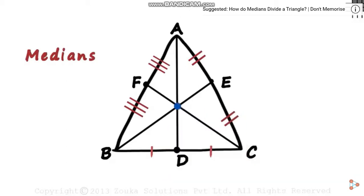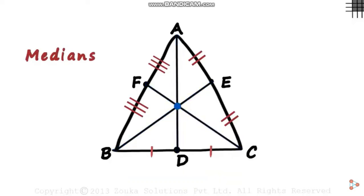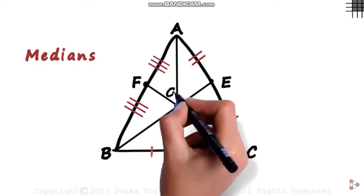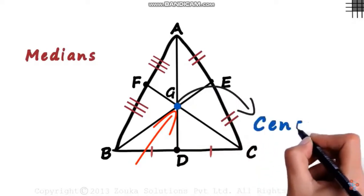We can say that all the medians are concurrent—they meet at one single point. The point where all the medians of the triangle meet is called the centroid, or center of the triangle.